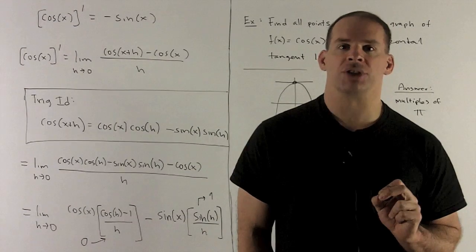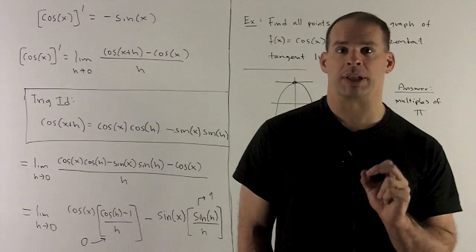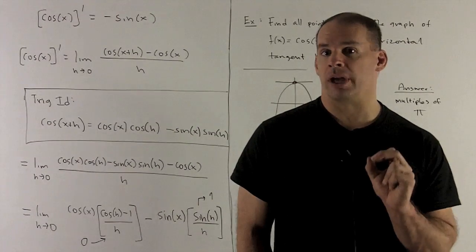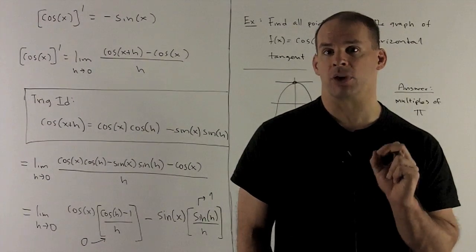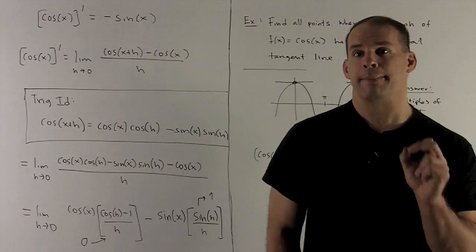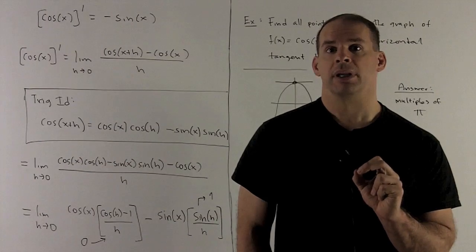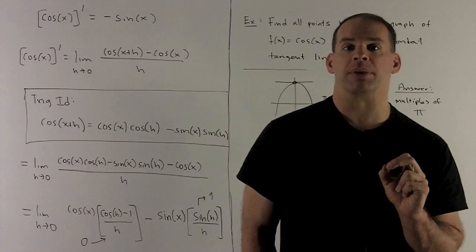We're going to set our limit definition of derivative up. We're going to wind up having to deal with cosine of x plus h. So I go and look up the identity that goes with the sum inside of a cosine. Rule there is cosine cosine minus sine sine. Put our x and our h in.